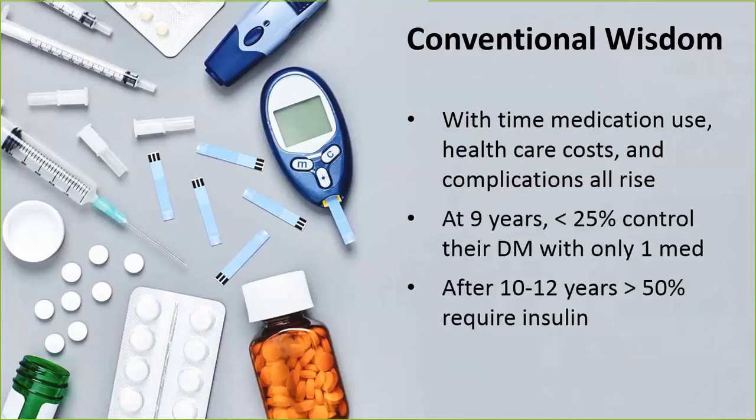When you look further, by 9 years after diagnosis, less than 25% of people can be controlled on one medication. And after 10 to 12 years, 50% of people require insulin. So this was really what I was armed with when I saw Don. He wanted to take control of his health, but really the facts seemed to be against him. So I started to look at this question: can diabetes be reversed?